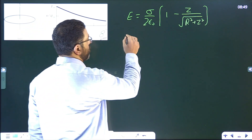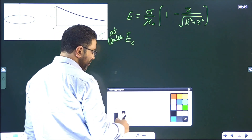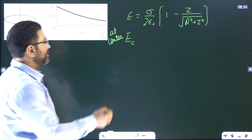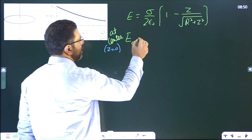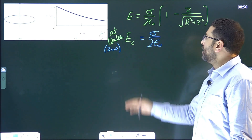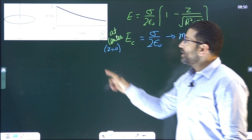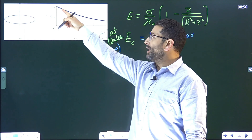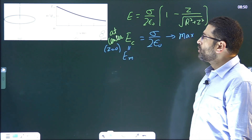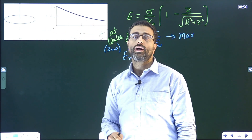Surface of the disk pe, center of the disk pe — E_c mein likhta hoon, at center. Center ke liye z woh zero ke barabar ban jae ga, z is the distance measured from the center. So at z equal to zero, E_c is equal to sigma divided by 2 epsilon_0. Yeh sara zero ban jae ga — wahaan par will be only left with sigma divided by 2 epsilon_0. So this is the maximum field, and field jo diya gaya hai that is in terms of this maximum, E_m.